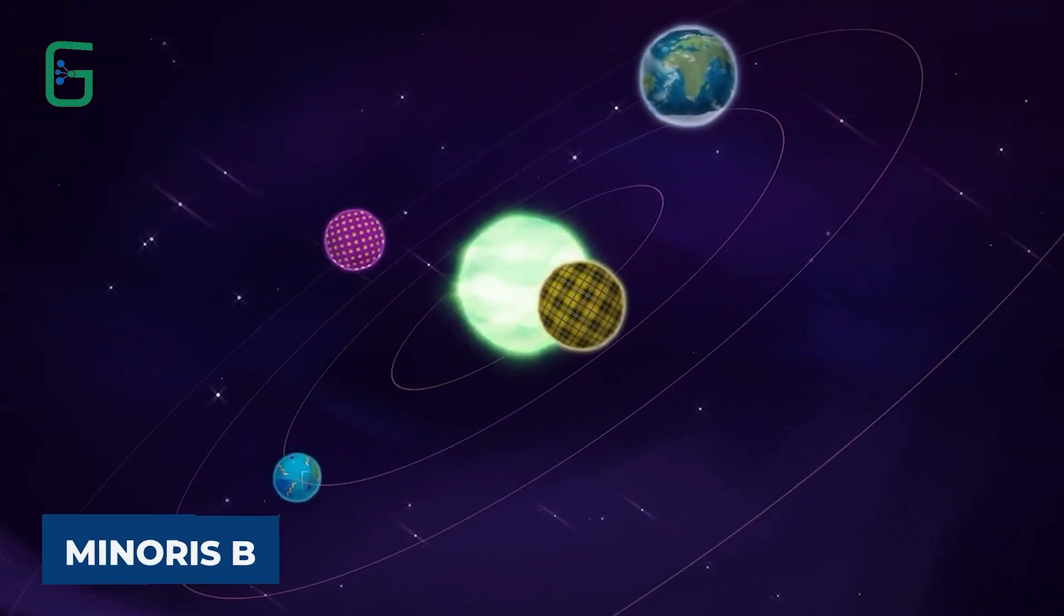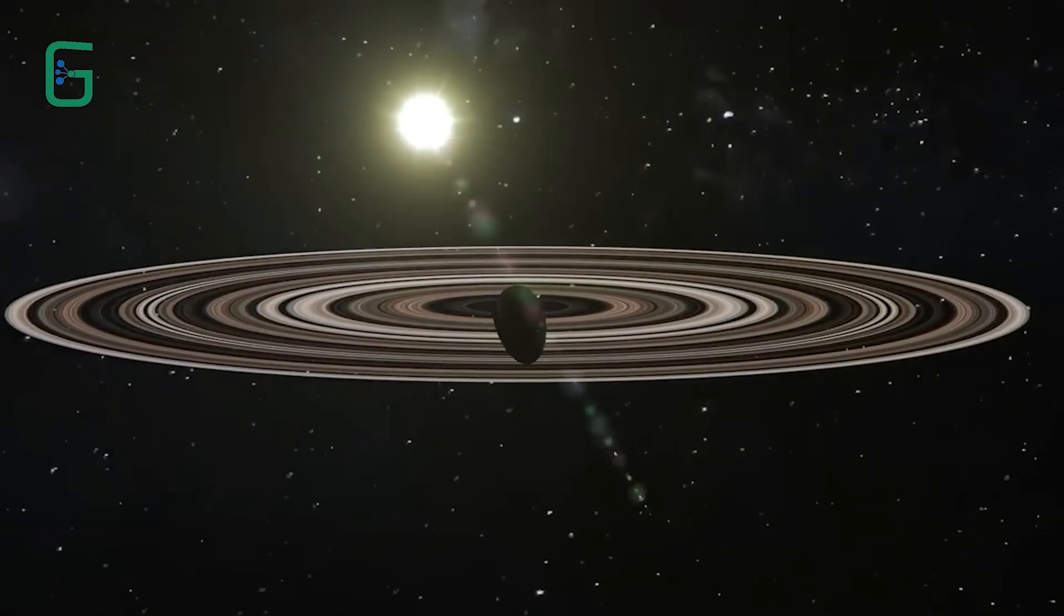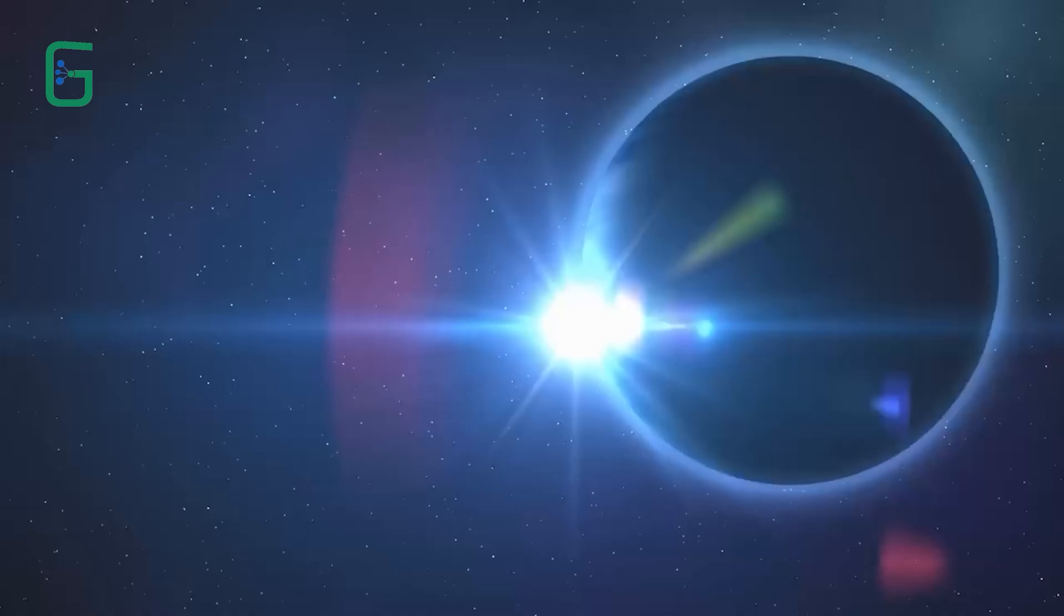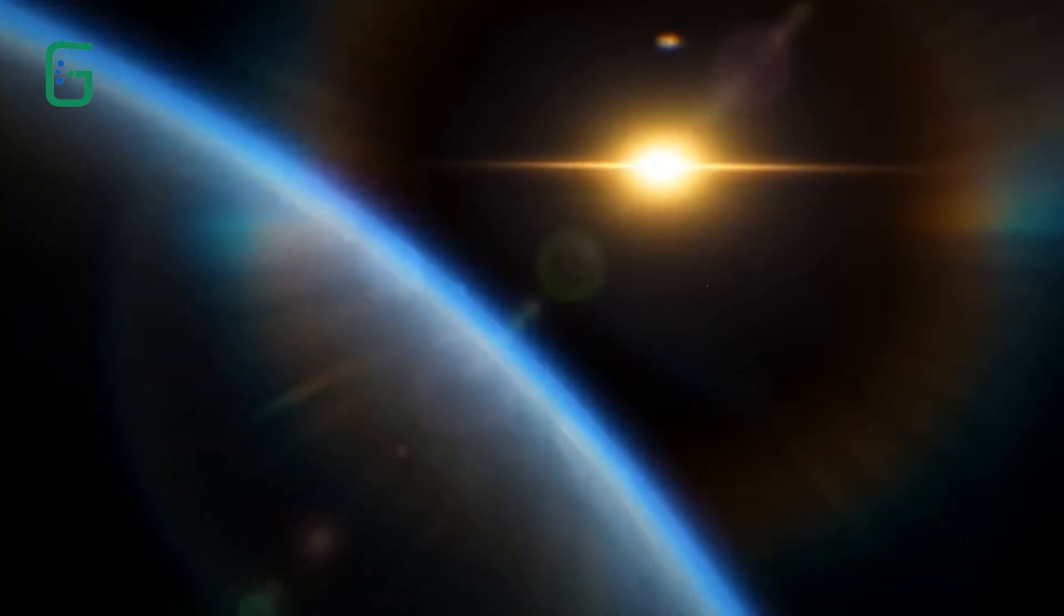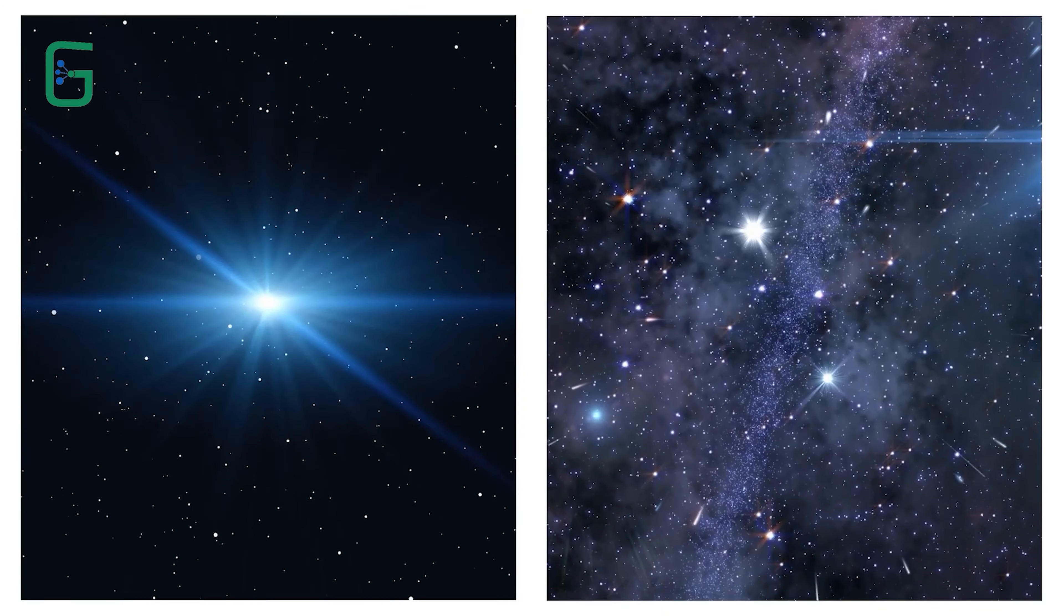The combined value of all the diamonds on 55 Cancri e is a mind-boggling $26.99 followed by a staggering 30 zeros. Putting it into perspective, it's a figure so immense that it dwarfs the imagination. It's a lot of cash, to say the least. If you ever dream of owning a piece of this celestial gem, you might need to reconsider your spending habits.